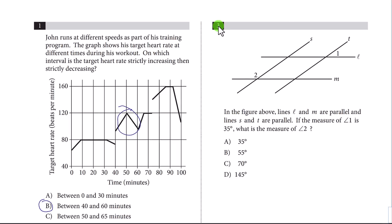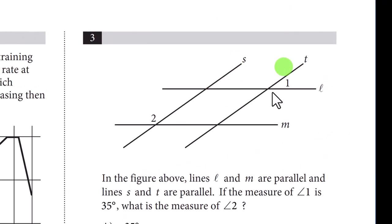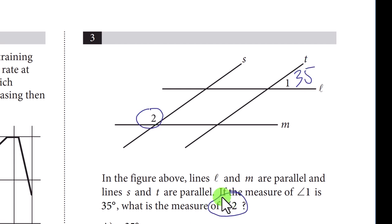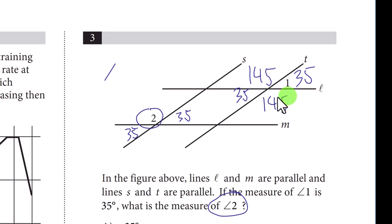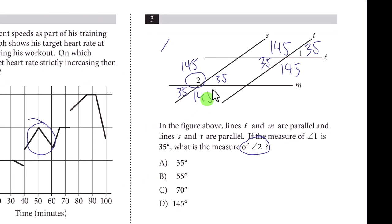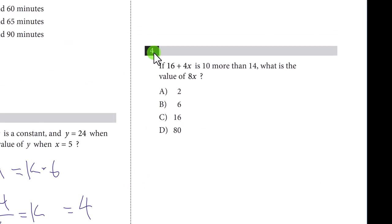Question three: two sets of parallel lines — s and t are parallel, l and m are parallel. Angle 1 is 35 degrees. You need to know that a straight angle is 180 and vertical angles are equal. So 35 appears in multiple spots; the supplementary angles are 180 minus 35, which gives 145. The answer is D.